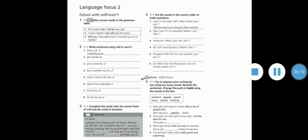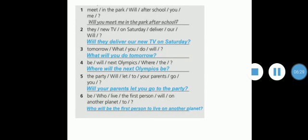Now exercise number four: put the words in the correct order to make a question. Here we have words we're going to order to make questions using will or won't. Number one: will you meet me in the park after school? Number two: will they deliver our new TV on Saturday? Number three: what will you do tomorrow? Number four: where will the next Olympics be? Number five: will your parents let you go to the party? And the last one: who will be the first person to live on another planet? So here are the answers. Please write them down.